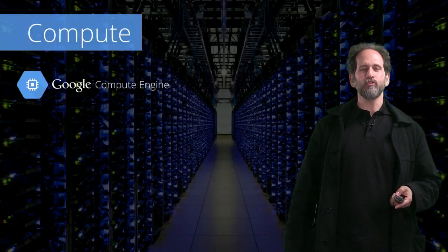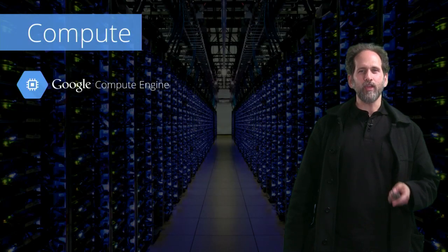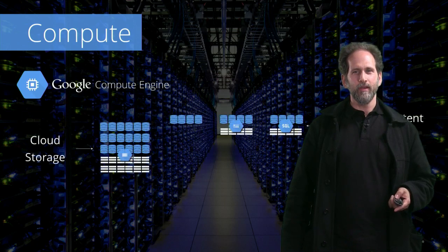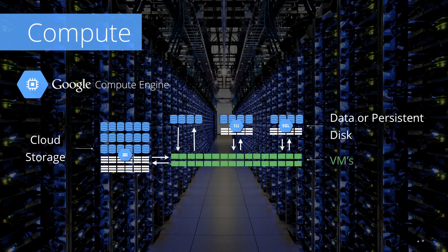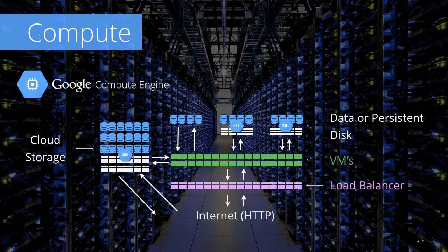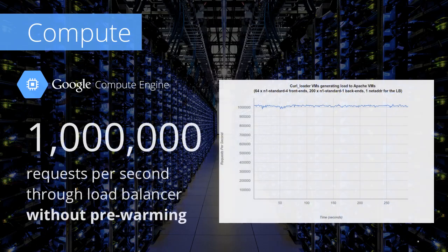Compute Engine, our infrastructure as a service, leverages the same reliable, highly distributed data storage layers used by App Engine, adding mountable persistent disk storage to the mix. These talk to the Compute Engine VMs, which are heavier weight than the App Engine instances. On top of these, we have a powerful load balancer which connects the system to the internet. The graph highlights the stability of the load balancing service — one million requests per second, without any pre-warming.